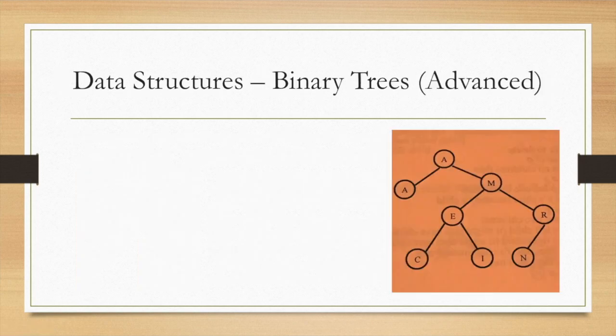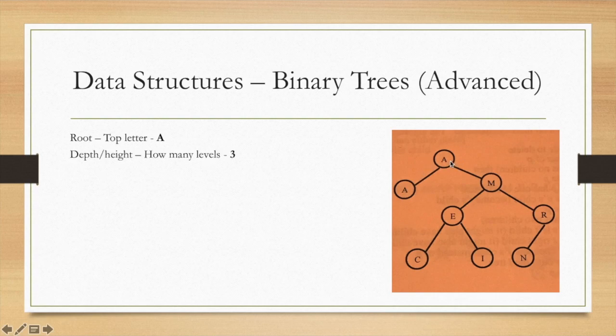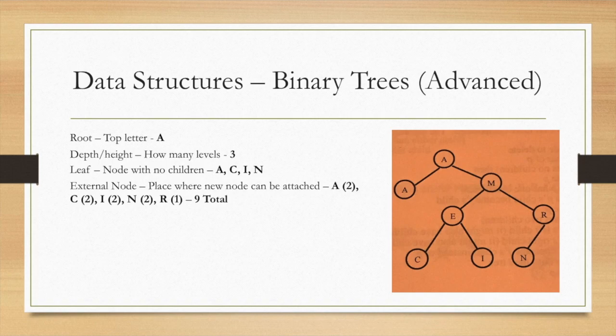Then there are some more advanced things to consider about binary trees. We call the root the very top letter, the depth or the height, the number of levels. In this case, it would be three: one, two, three. You think about that like the most amount of steps down. The leaf is a node with no children. So here that's A, C, I, and N. A has two children, so does M. R only has one child. An external node is a place where a new node can be attached. So A has two of them, C has two of them, I has two of them, N has two of them. R, though, already has a node and can only have one added below it to the right, so that's only one. So there's nine total here.